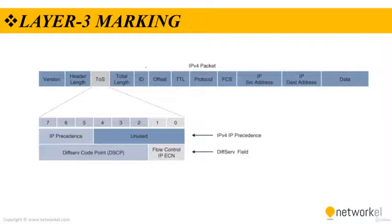For layer 3 marking, we use the TOS field, as you can see on the screen. The TOS field is an 8-bit field where only the first 3 bits, referred to as IPP (IP Precedence), are used for marking — the rest of the bits are unused. IPP values range from 0 to 7, allowing traffic to be portioned into up to 6 usable classes of service, as IPP 6 and 7 are reserved for internal network use.